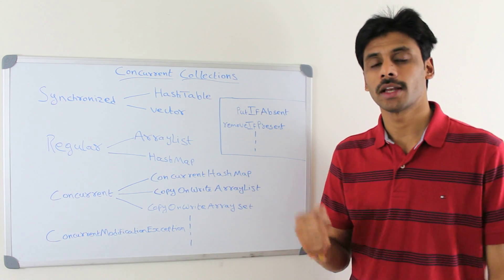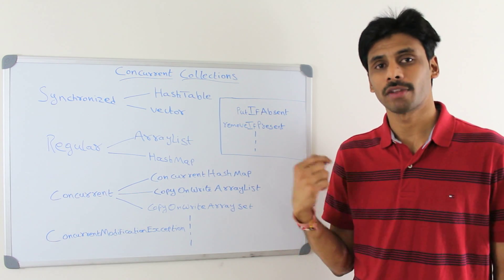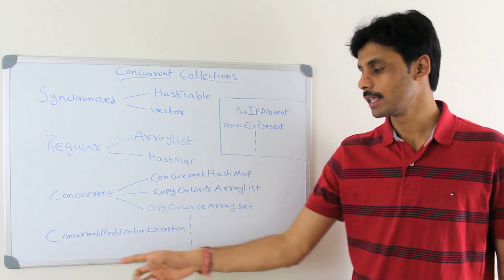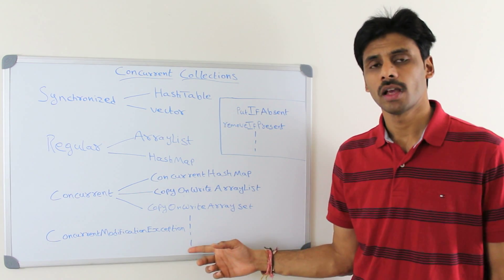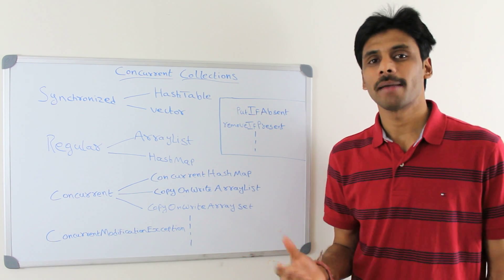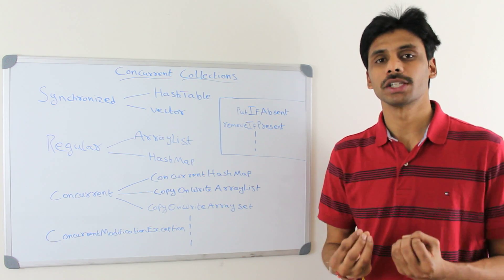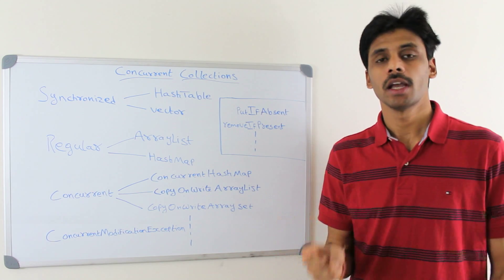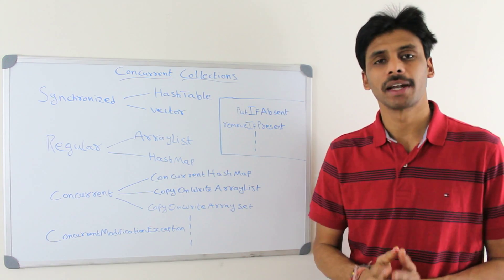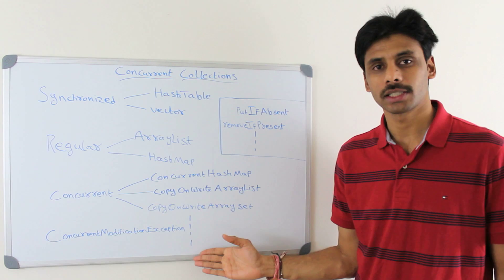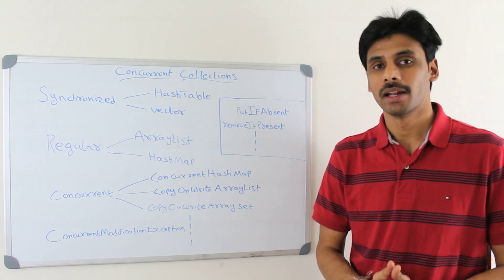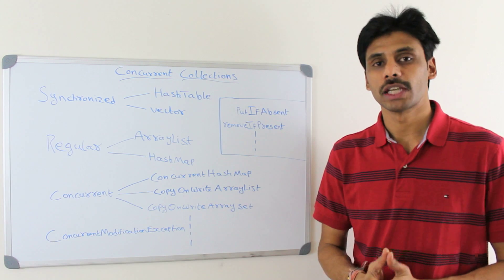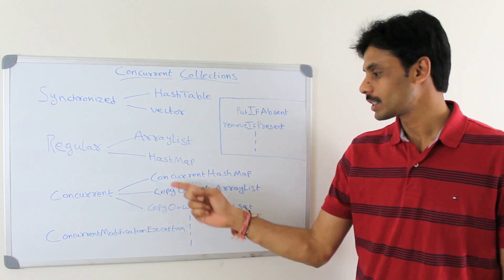So if you are iterating through a collection in one thread and another thread tries to add an element or object to that collection, you will see a ConcurrentModificationException. This is good, but at the same time we lose concurrency. If you are doing a lot of reads in ten different threads and one thread is updating a collection, you still get a ConcurrentModificationException, which is not desirable.